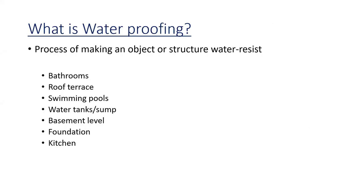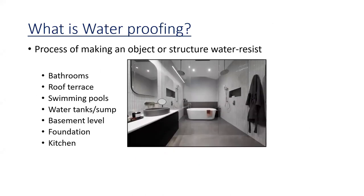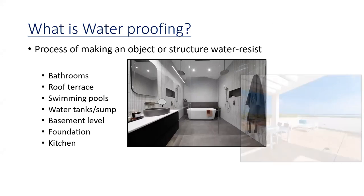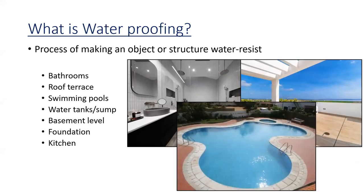First we will discuss what is waterproofing. Waterproofing is the process of making an object or structure water resistant. We apply waterproofing in the bathroom, roof, various areas, swimming pools, water tanks, sumps, basement level, foundation, and kitchen.